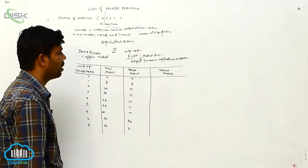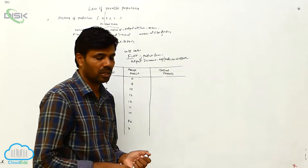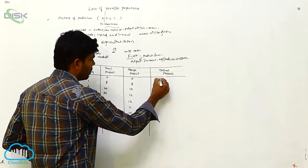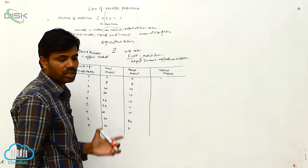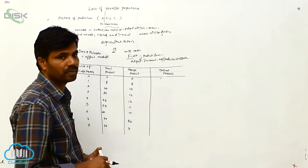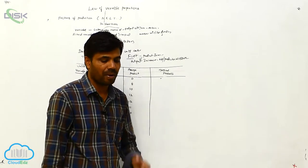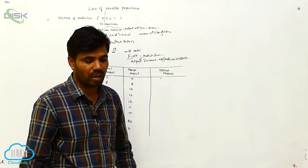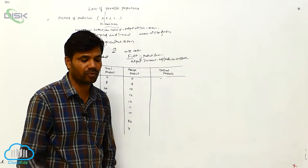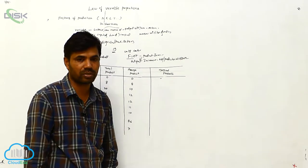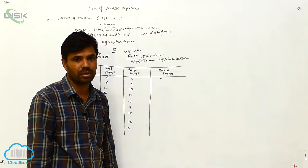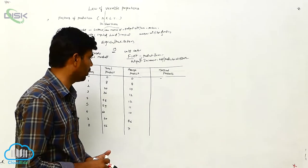Next is marginal product. Same thing, we are going to look at that one. There is a zero stage. How to get the marginal product? Marginal product is the output obtained by employing an additional unit of variable factors — that is called marginal product. If you are using an additional unit.